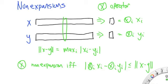So we say an operator is a non-expansion if and only if it has the property that if you take two vectors, x and y, take the summary of x and the summary of y and look at the difference between them, that has to be smaller than or equal to the distance between the two vectors.